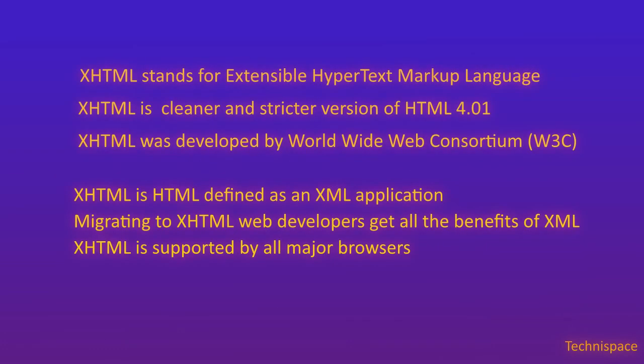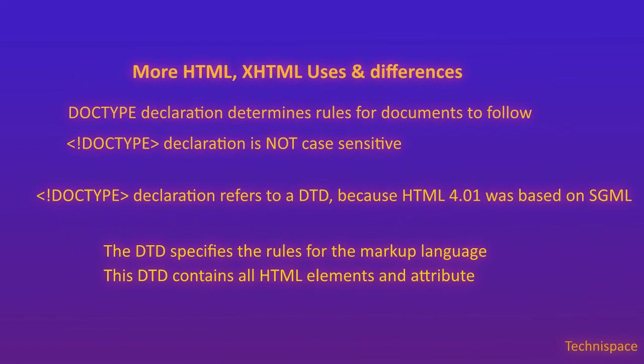XHTML stands for Extensible Hypertext Markup Language. XHTML is a cleaner and stricter version of HTML 4.01. It was developed by the World Wide Web Consortium (W3C) to help web developers make the transition from HTML to XML. By migrating to XHTML, web developers get all the benefits of XML while remaining confident in backward and future compatibility of their content.